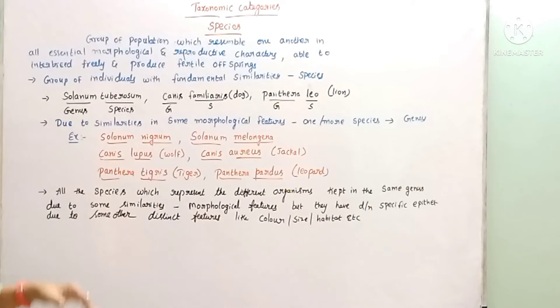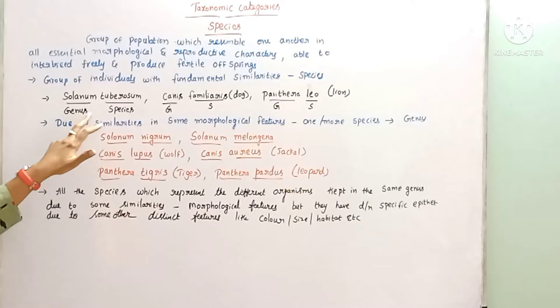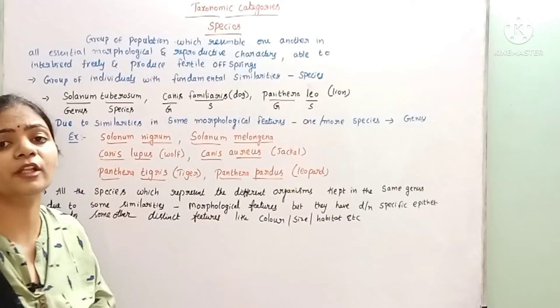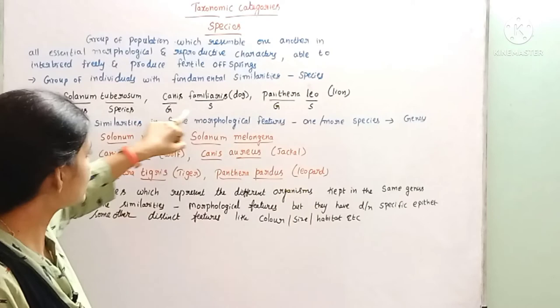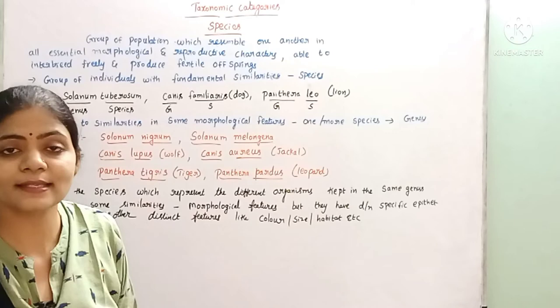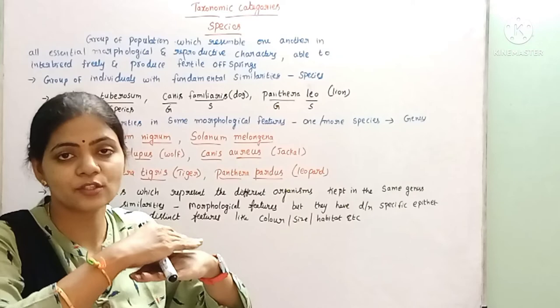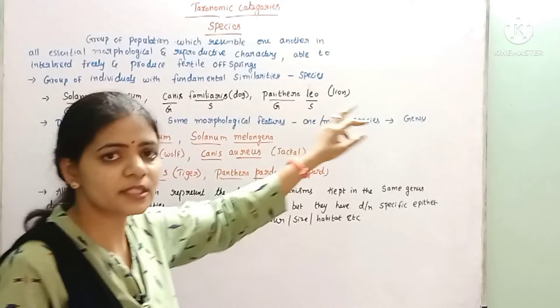They share common morphological and reproductive characters and are able to interbreed and produce fertile offspring — that is called species. Examples: Solanum tuberosum, Canis familiaris, and Panthera leo. Here tuberosum, familiaris, and leo are all called the species name — in binomial nomenclature, the first name is the genus and the second is the species. Solanum, Canis, and Panthera are the genus names. Genus is the next highest rank compared to species in the taxonomic hierarchy.